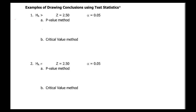Starting with the first example: the alternative hypothesis sign is greater than, so we're doing a right-tailed test. It gives us a value for z — the calculated test statistic — and a value for alpha. This z is what was calculated; it's not the critical value of z, which we would get from alpha. Let's draw a picture for each one so we know what we're looking for.